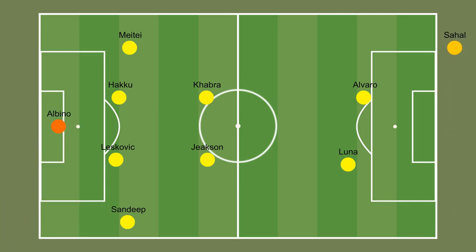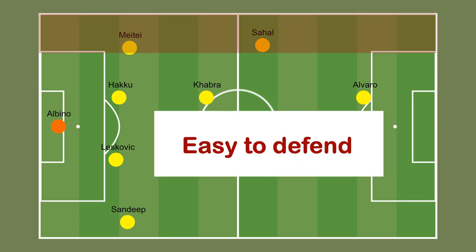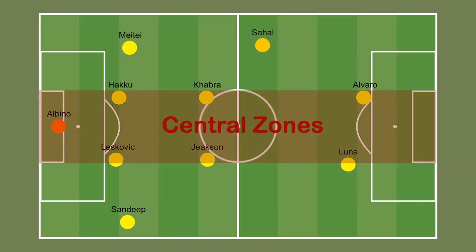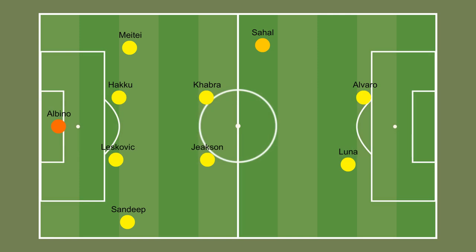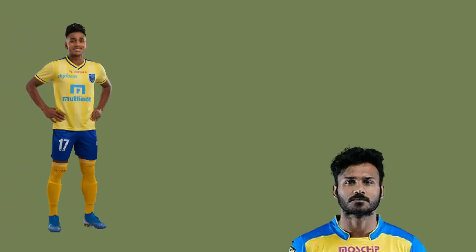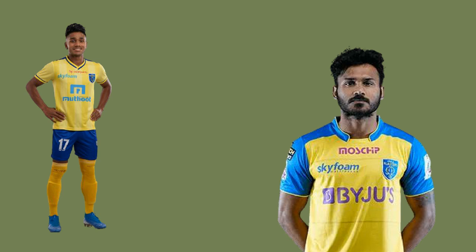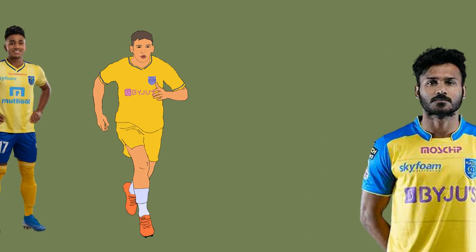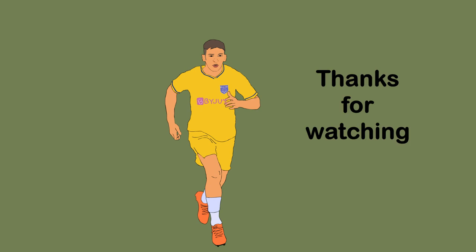The next option is as a left midfielder. It is easier to defend at the wings compared to the central zone, but the coach prefers Diaz in that position, so we can only expect Sahal in the absence of George Parair Diaz. The last position apt for Sahal is the right wing, but Rahul and Prashanth are playing very well, so there will be healthy competition for the spot. Thanks for watching.